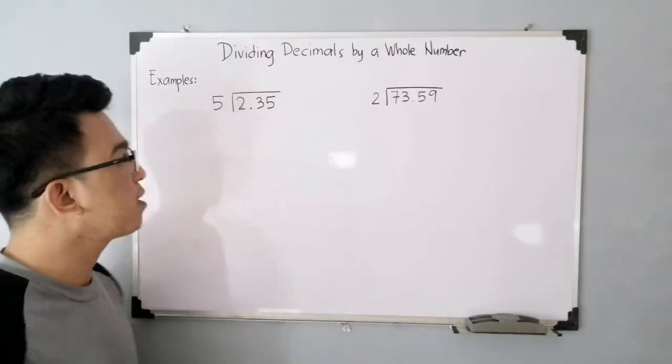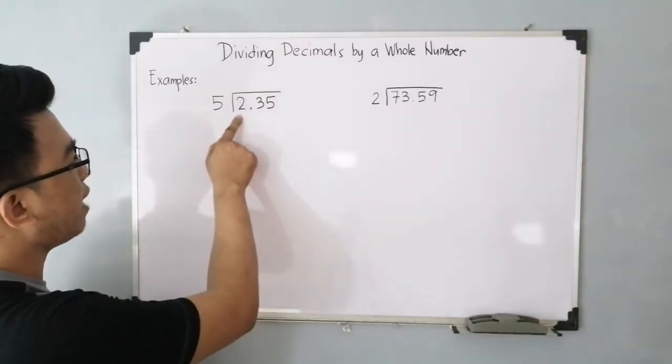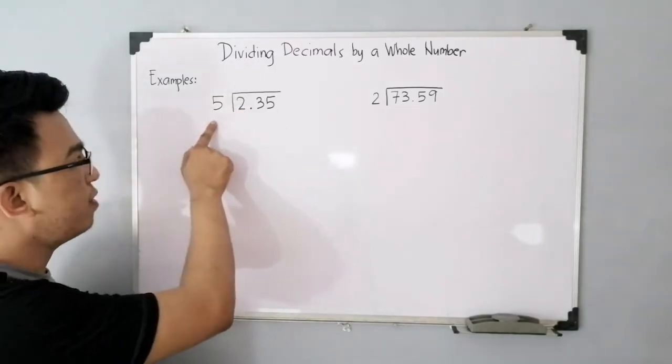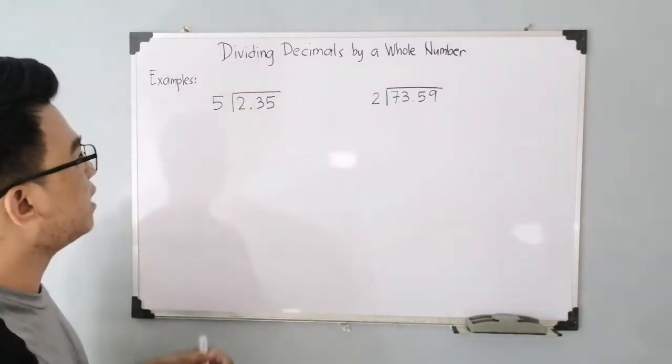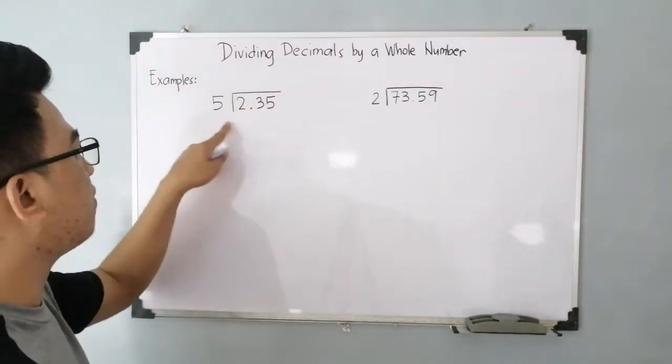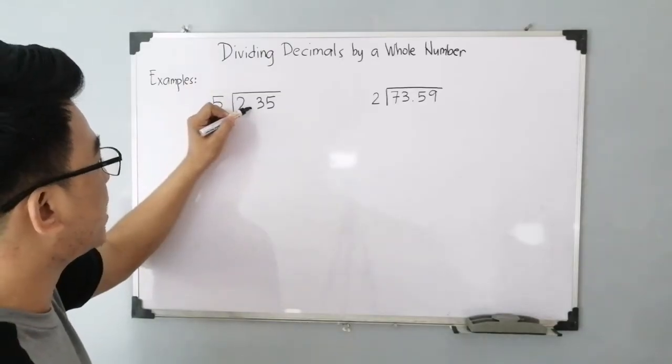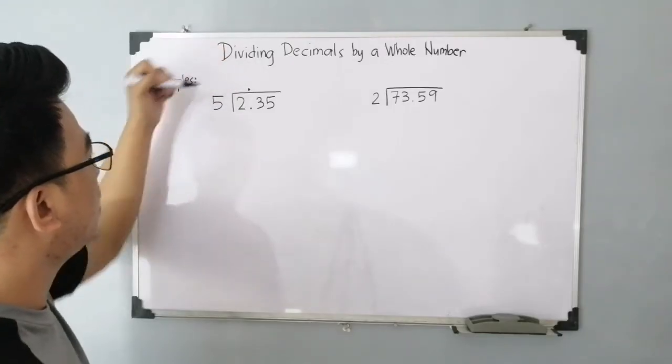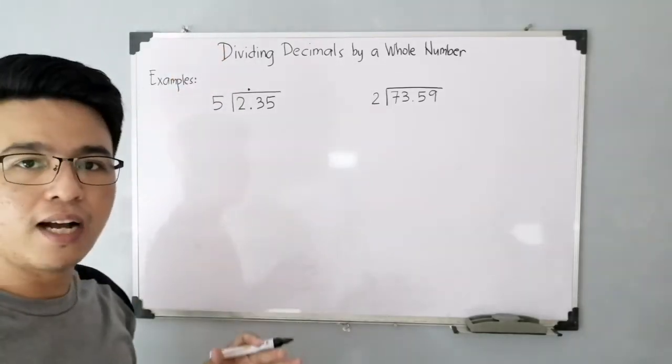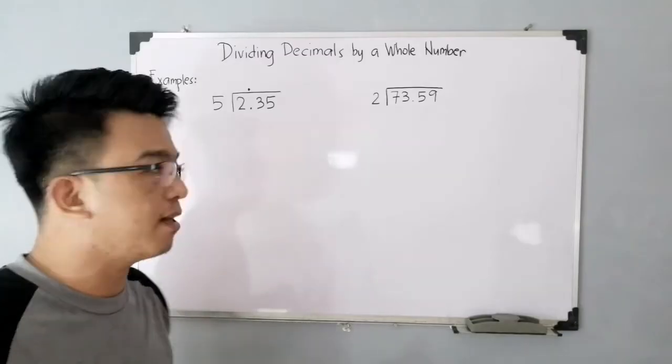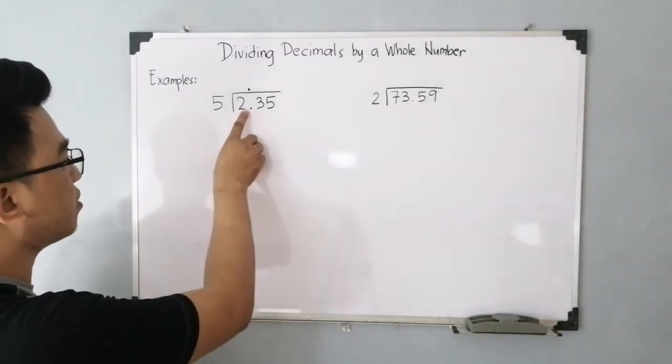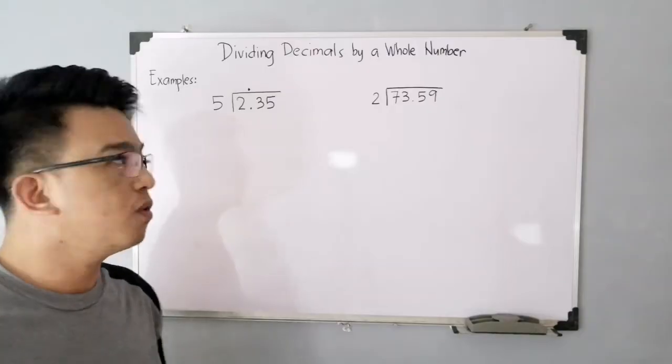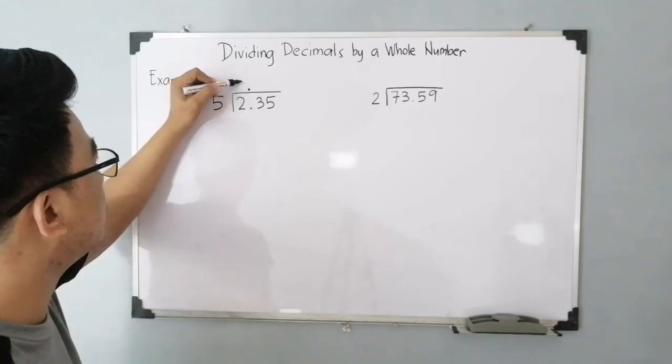So again, this is your dividend, we have 2.35 divided by your divisor 5. First, since we have a decimal point here at 2.35, place the decimal point above, and then divide the number as you imagine normal division. You have here 2 divided by 5. We know there's no 5 in 2, so the quotient is equal to 0.